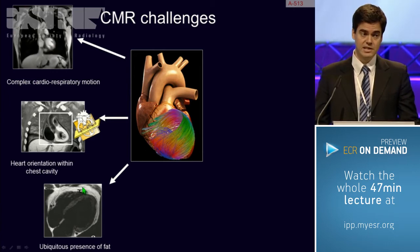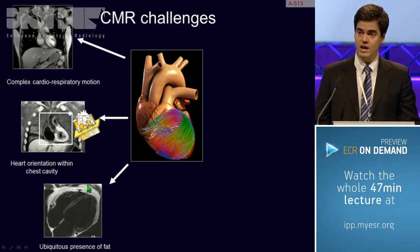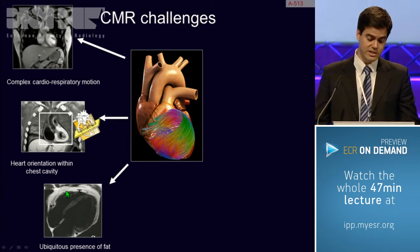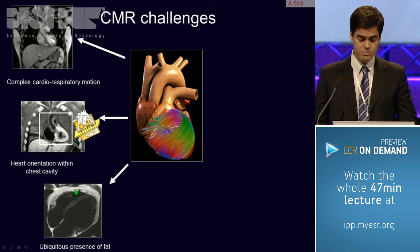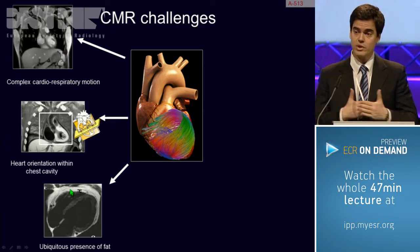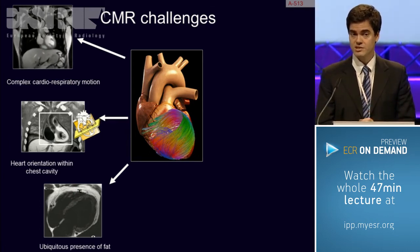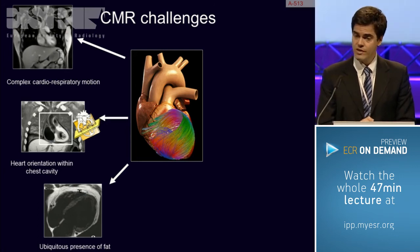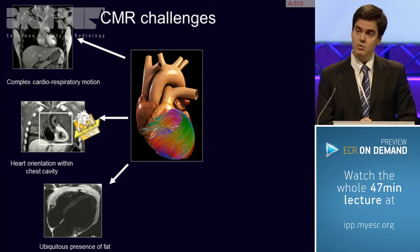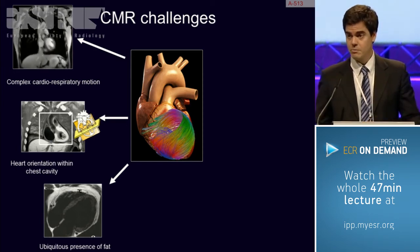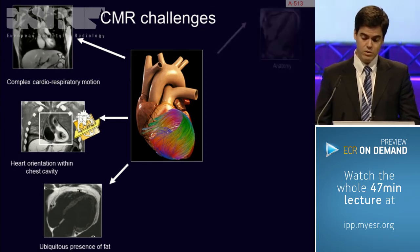The third problem, which we will extensively discuss, is related to the presence of fat. Fat tissue completely surrounds the heart and is mostly visible at the level of the right ventricular free wall, as shown here. It is strictly connected with the epicardium, so when we discuss possible depiction of fat infiltration and arrhythmogenic right ventricular dysplasia, we will show how tricky this can be and how to overcome this potential pitfall.